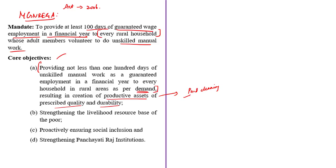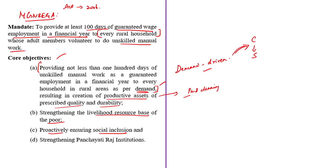Other core objectives include strengthening the livelihood resource base of the poor, proactively ensuring social inclusion, and strengthening Panchayati Raj institutions — local bodies representing the grassroots of Indian democracy. The goals of this program include achieving social protection for the most vulnerable people in rural India by guaranteeing wage employment opportunities, enhancing livelihood security of the rural poor through generation of wage employment that creates durable assets, and rejuvenating the natural resource base of rural areas.